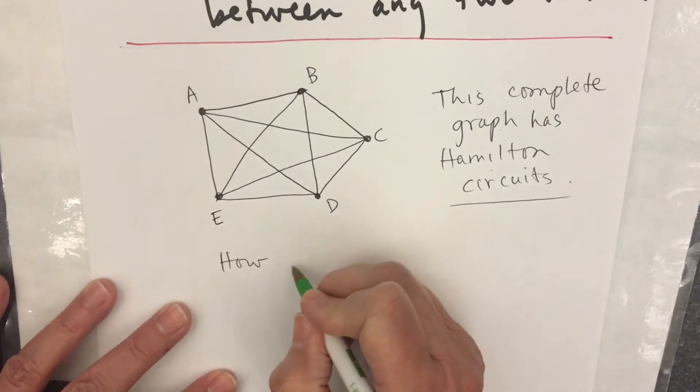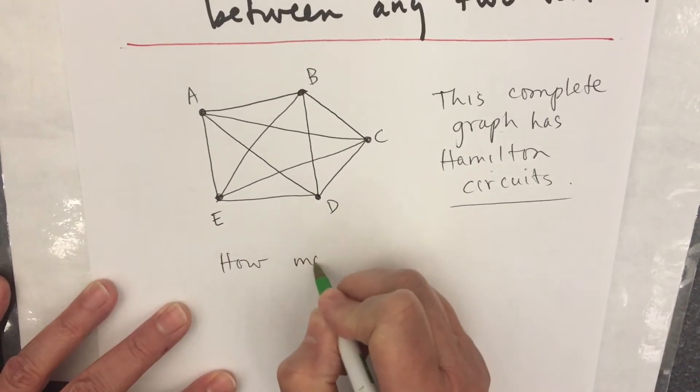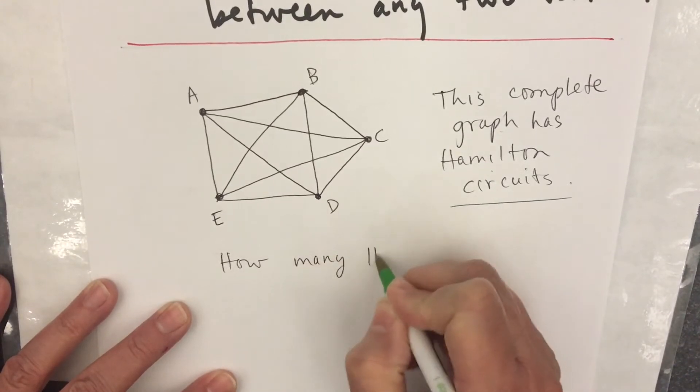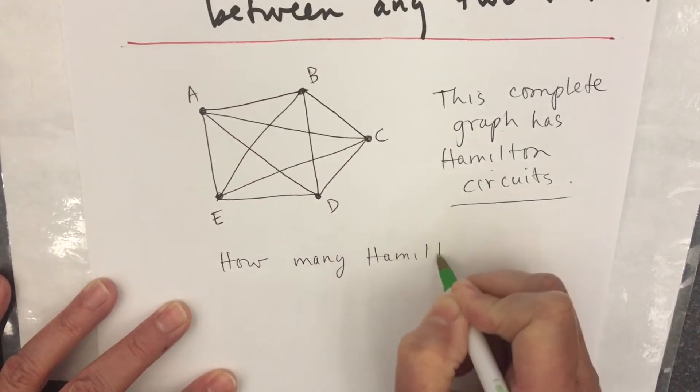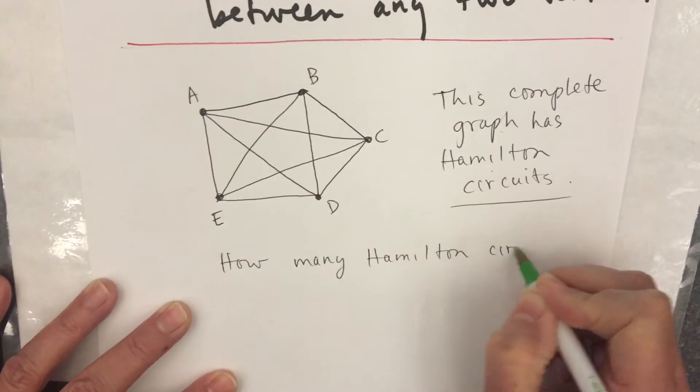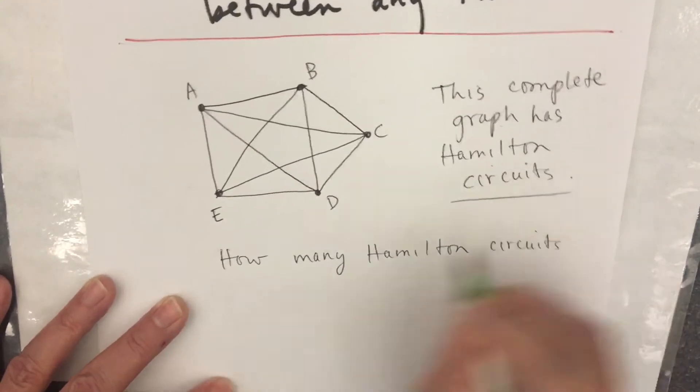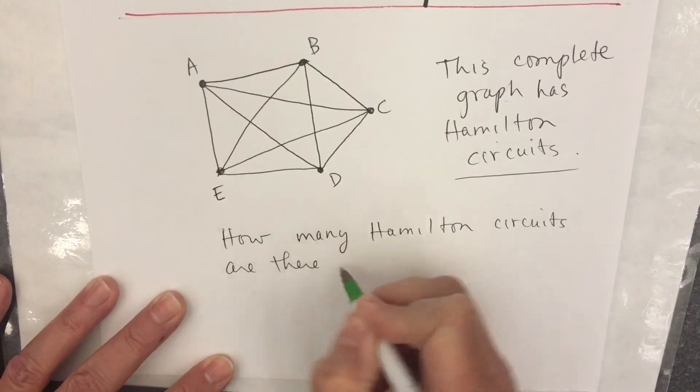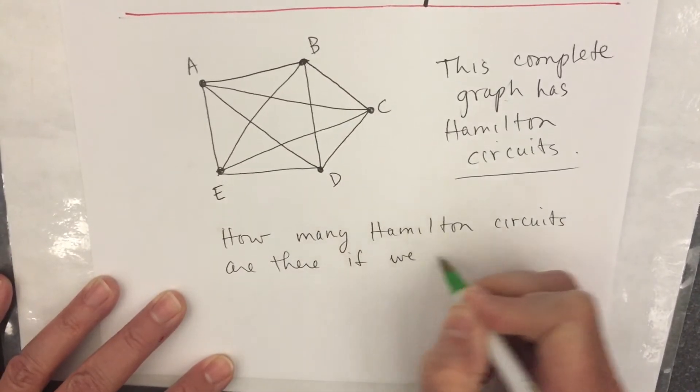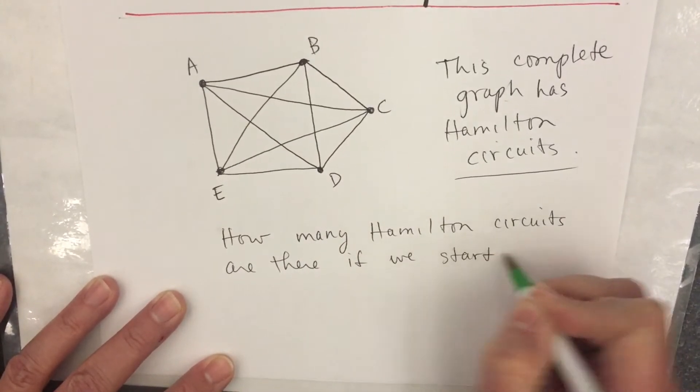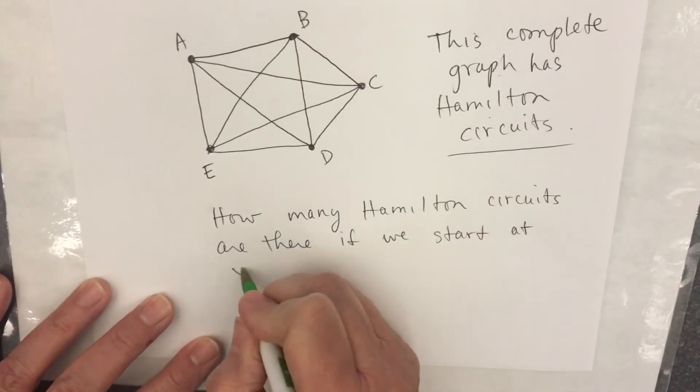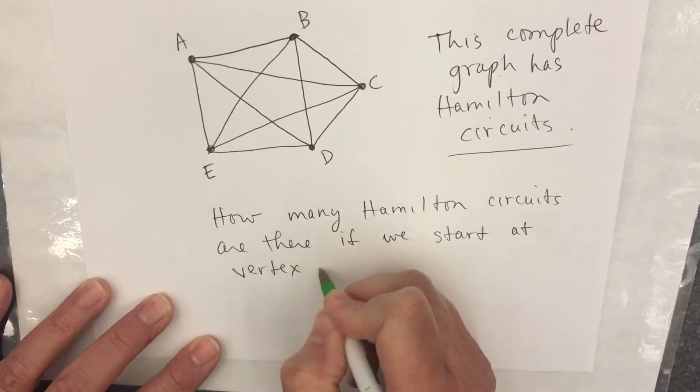I'll write the question kind of the way they answer it. How many Hamilton circuits are there if we start at vertex A?